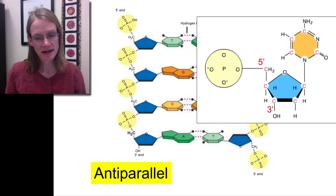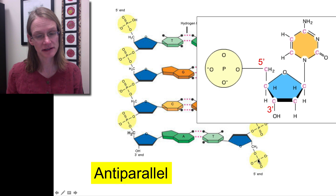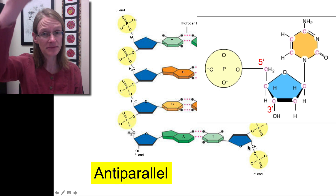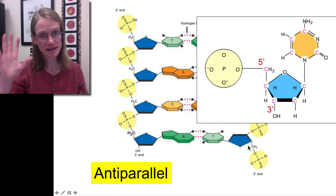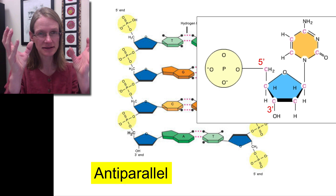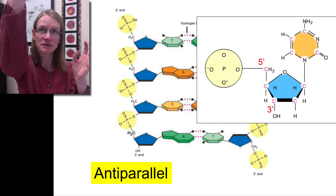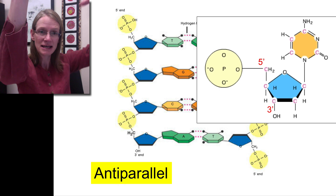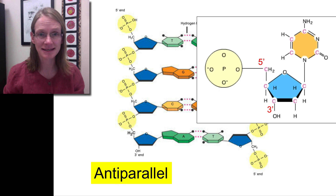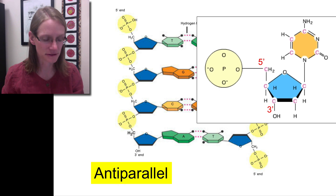The only end we can actually add things to is the three prime end, so this strand is building downward because that's the only end you can add more nucleotides to. If we look at the other side of this molecule, you can clearly see the five prime end with the phosphate group, so in that case it's actually going to build upward. One side builds in one direction and the other side builds in the other direction — that is the anti-parallel nature of DNA.